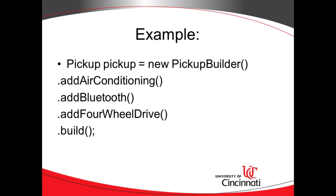Let's take a look at an example. Let's say I want to build a pickup truck. So the pickup is the object type that I want to build, but I've separated this building process into a separate class called Pickup Builder. I'm invoking a Pickup Builder constructor, and then after that, I'm calling three methods that begin with Add: Add Air Conditioning, Add Bluetooth, and Add 4-Wheel Drive. These are the options that I want to add to my pickup when I'm creating it.